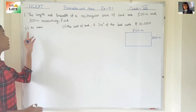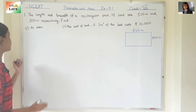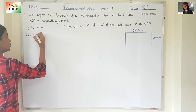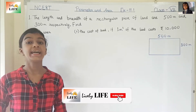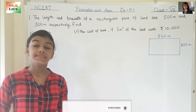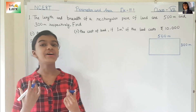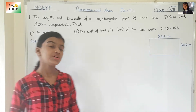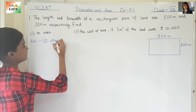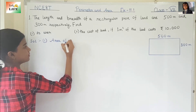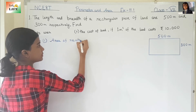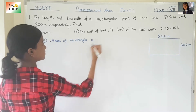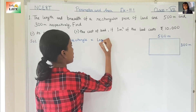Now, what do we need to find out? We need to find out its area. So, what is the formula of area of a rectangle? The formula for finding the area of a rectangle is length into breadth. Length and breadth are given, so let's write: area of rectangle = L into B, or length into breadth.